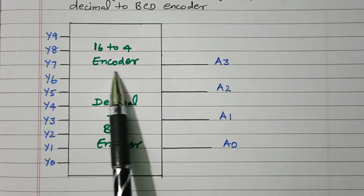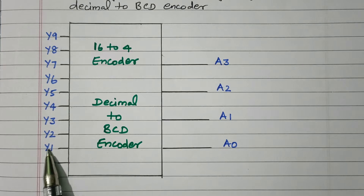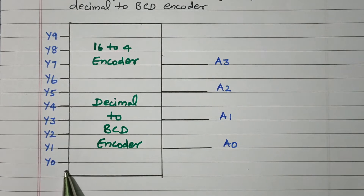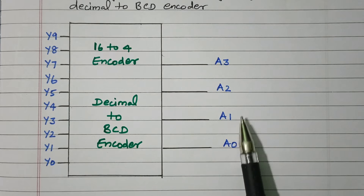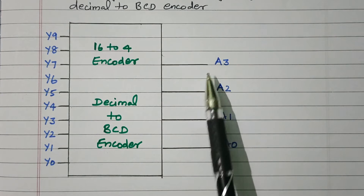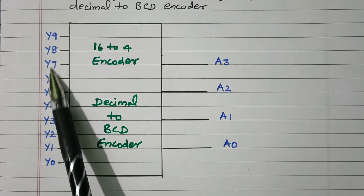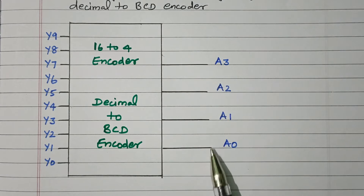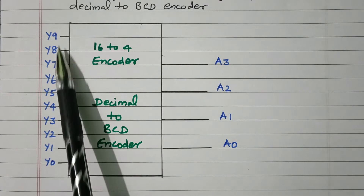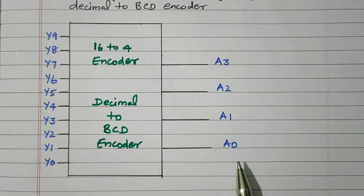This is the 16 to 4 encoder, or decimal to BCD encoder. Y0, Y1, Y2, Y3, Y4, Y5, Y6, Y7, Y8, Y9 — there are 10 different inputs available. According to these 10 different inputs we have four different outputs: A0, A1, A2, and A3. At a given time any one input will be 1. For example, if Y0 is 1 and all others are 0, we get 0000 as the output. If Y1 is 1 and others are 0, we get 0001. We are using only 10 inputs (0 to 9) to get valid BCD output.